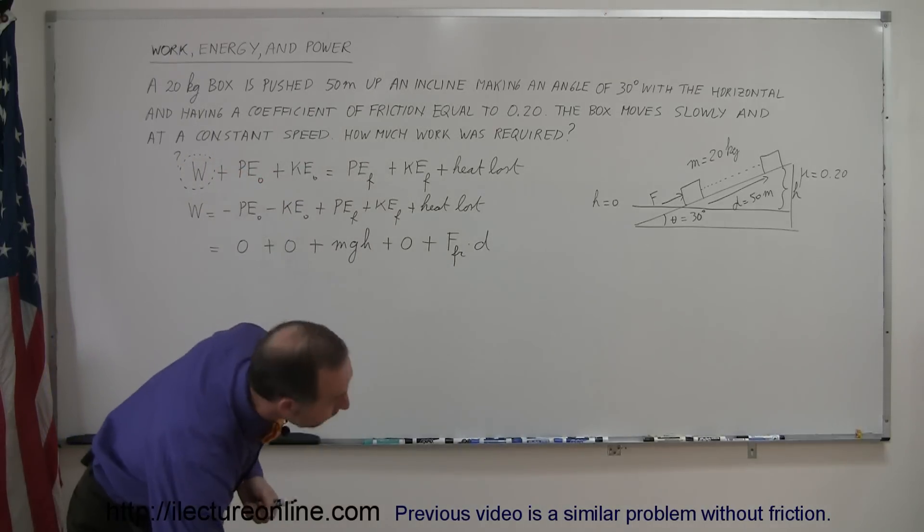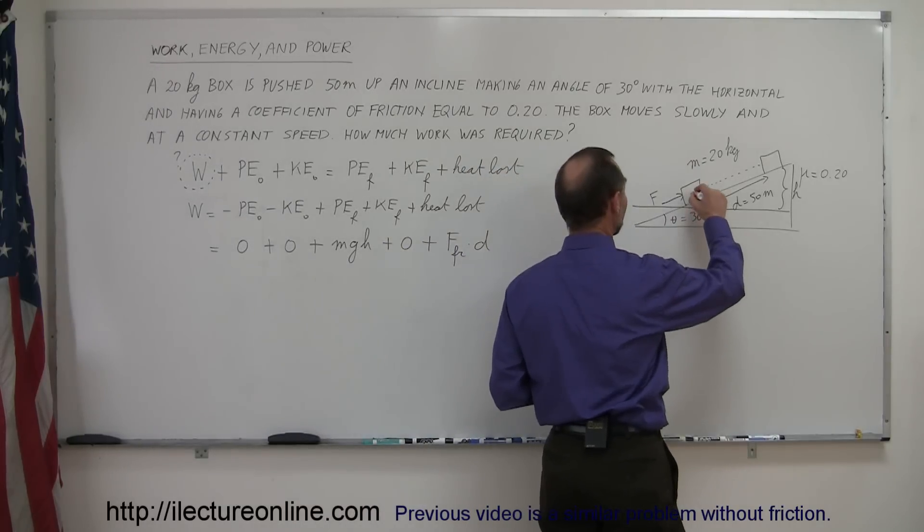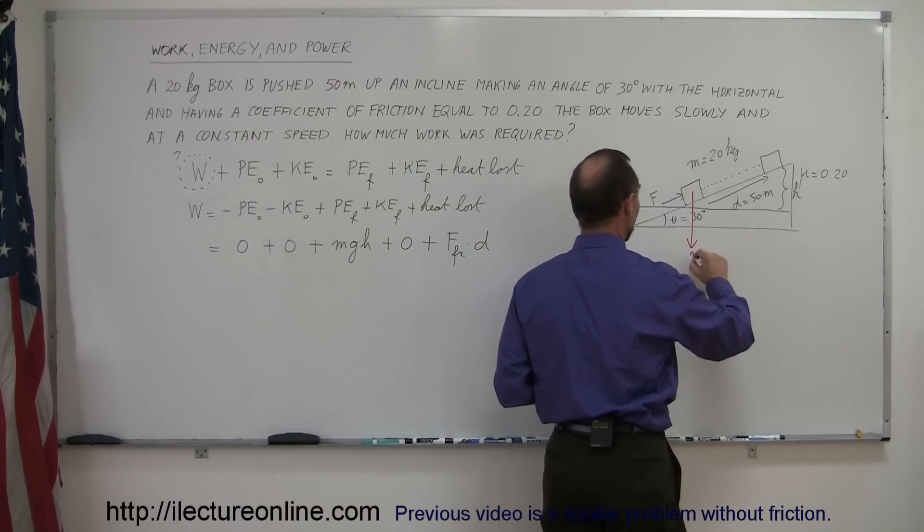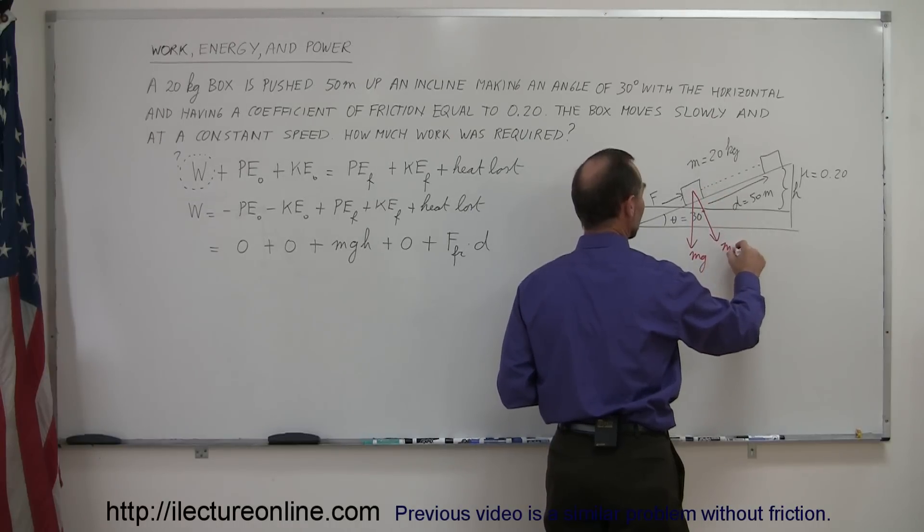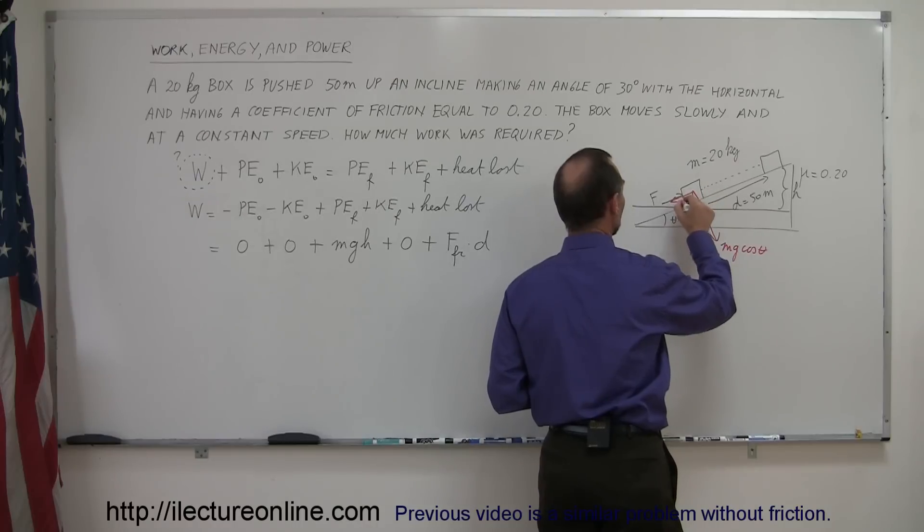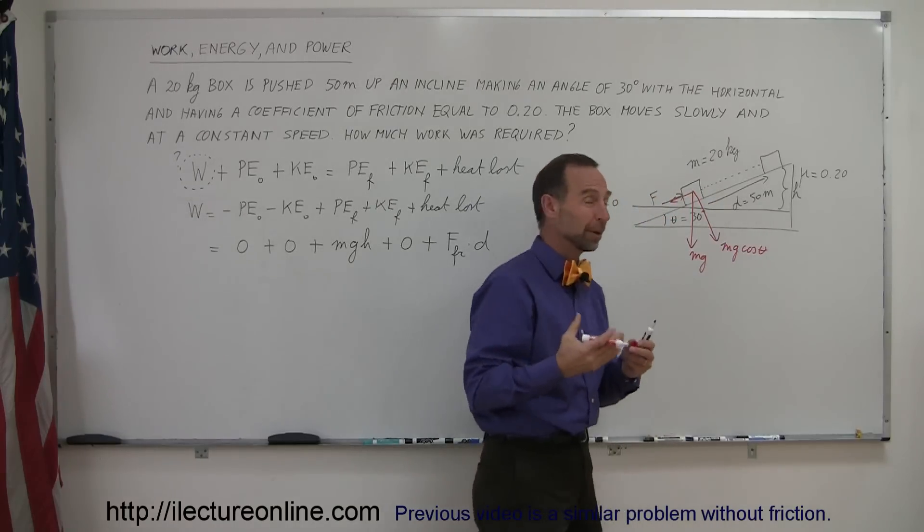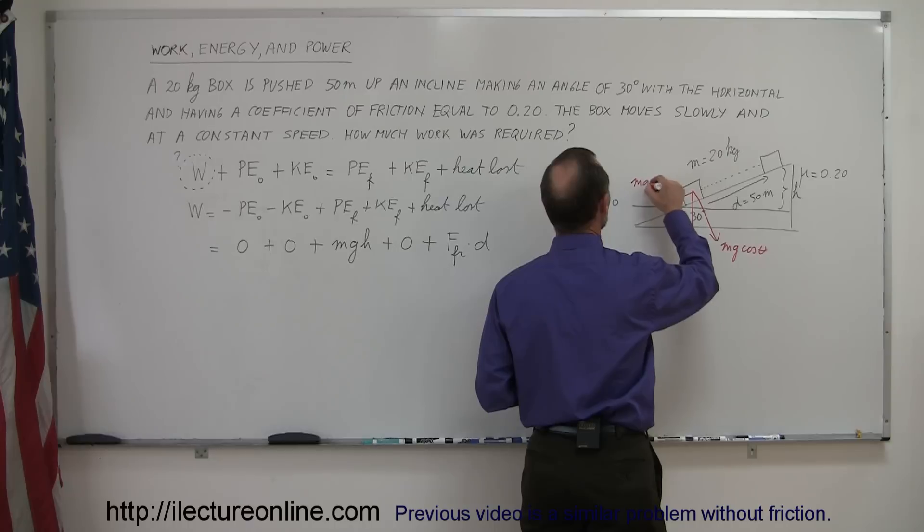So grabbing a pen of a different color, let's make some diagrams here. We can see that when we have the box, the box has a weight Mg. So there'll be a perpendicular component to the box, which we call Mg cosine theta. And we have a horizontal component to the box, or I should say a component that's parallel, it's not horizontal, but parallel to the incline, so this is Mg sine theta.